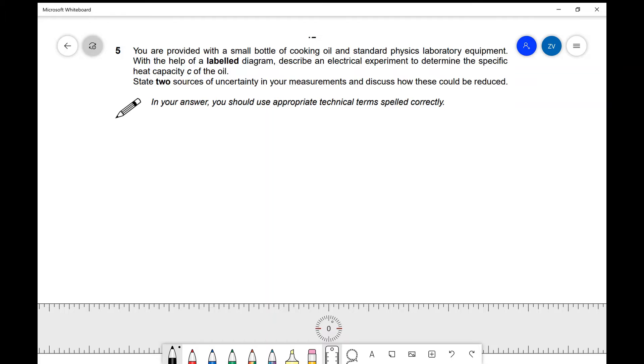Describe an electrical experiment to determine the specific heat capacity of the oil. After we've done that, we need to state two sources of uncertainty in our measurements and discuss how those could be reduced.